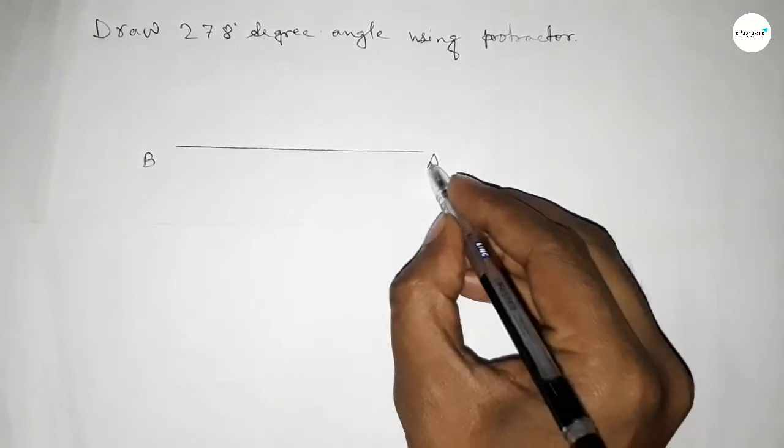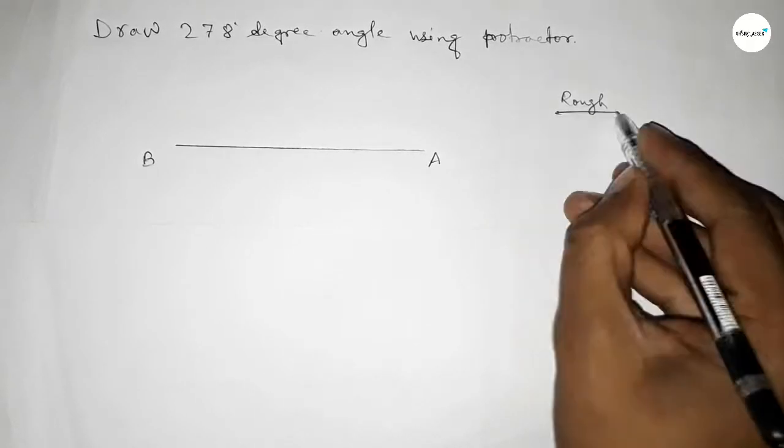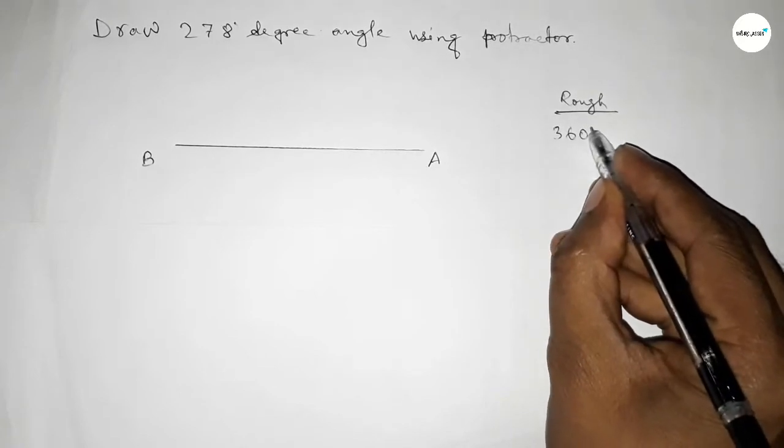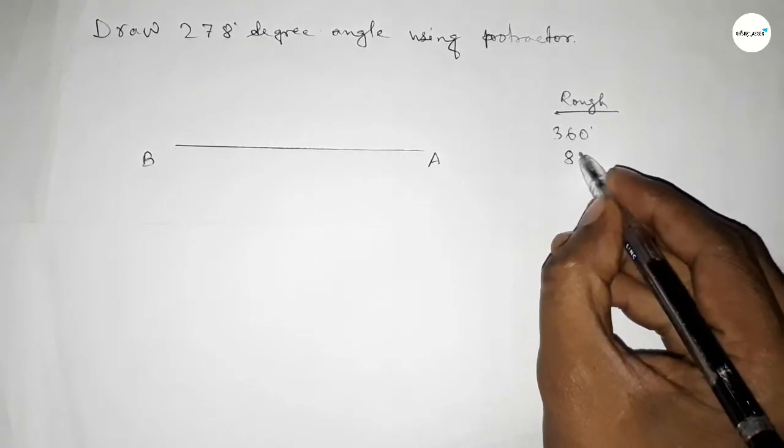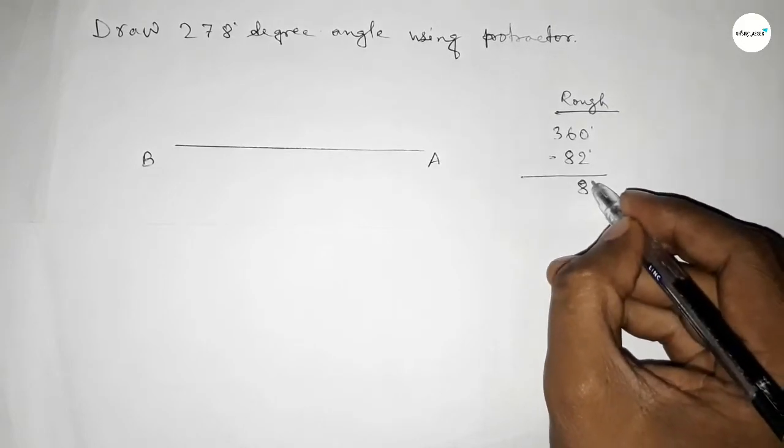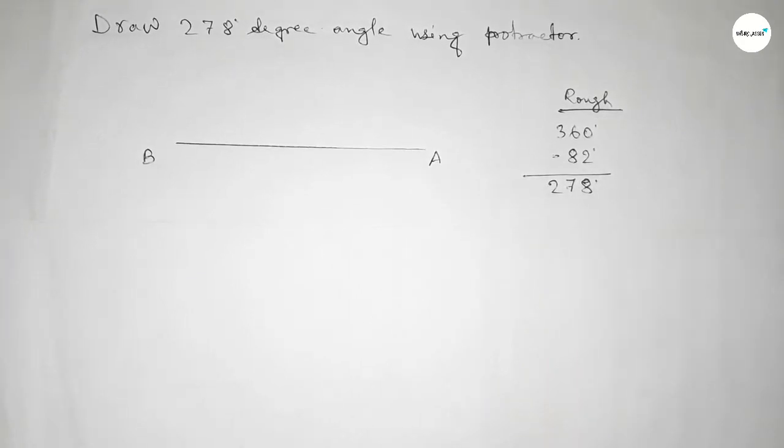point B and here point A. Now roughly discussing here some calculation: if we subtract 82 degree angle from 360 degrees, then we can get 278 degree angle. So this is 8 carry 1, so this is here 7 and 2. So first we have